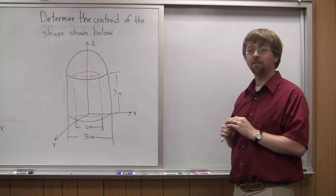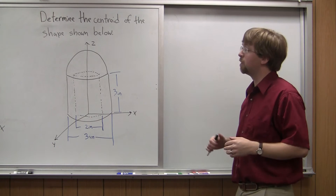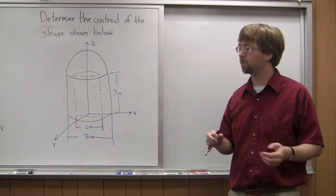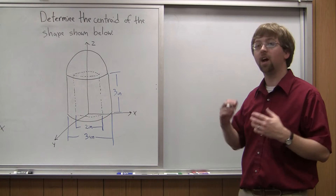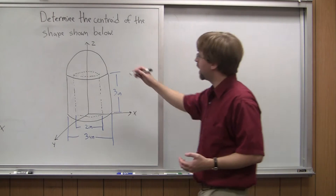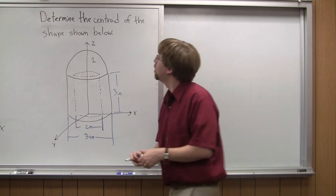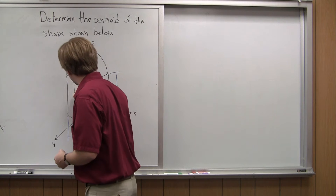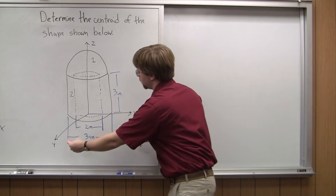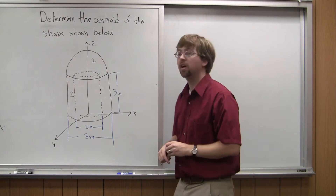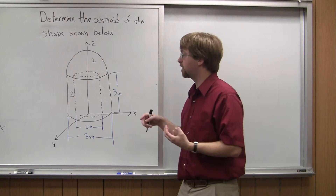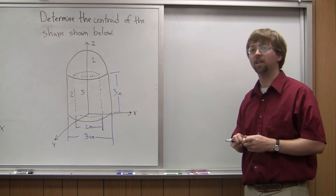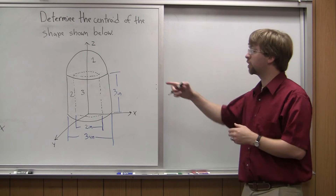With the method of composite parts, we need to first break this piece down into parts that we can look up in our table. I've got three parts that I ended up choosing. Part one is going to be the hemisphere on the top of my piece. Part two is going to be this cylinder with a diameter of 3 inches and a height of 3 inches. And then part three is actually my cutout — another cylinder that's going to be the cutout piece.